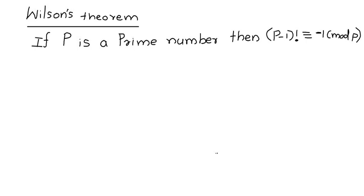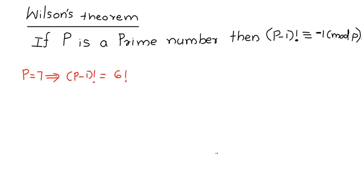What is Wilson's theorem? If p is a prime number, then (p-1)! is congruent to -1 modulo p. For example, when p is equal to 7, then p minus 1 factorial is 6 factorial, and 6! is congruent to -1 modulo 7. This is Wilson's theorem.